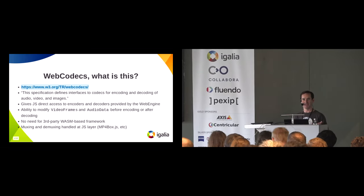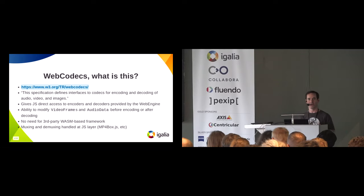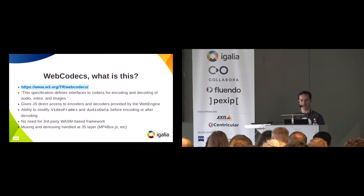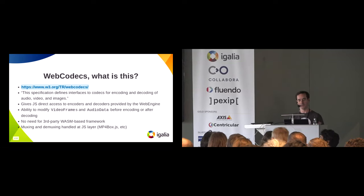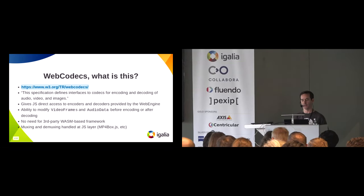You basically get access to decoded raw frames and raw audio samples, and you can modify them before encoding or after decoding. Muxing is separate — it has to be handled before or afterwards using a JavaScript layer.